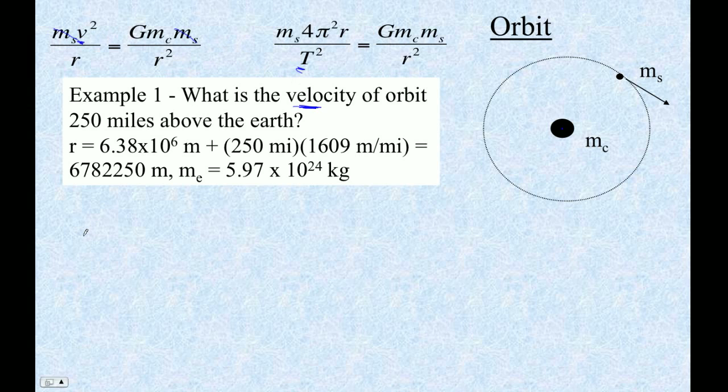So ultimately, I'm going to go mass of the satellite v squared over r equals G mass of the central body mass of the satellite over r squared. The question is, of course, the central body is going to be the Earth, so I'm going to use this mass. But the question is, what's the radius of orbit? And this is the trickiest thing of all. If it's 250 miles above the Earth, then the radius is Earth's radius plus 250 miles. That's what it means to be above the Earth.